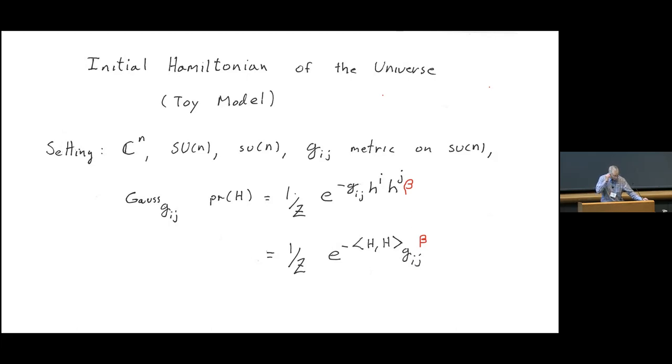You're all familiar with the Killing form, that's what it's called in mathematics, or the L2 metric on SU(n), where the norm squared of a vector is just the sum of the squares of its entries, entries of the matrix.